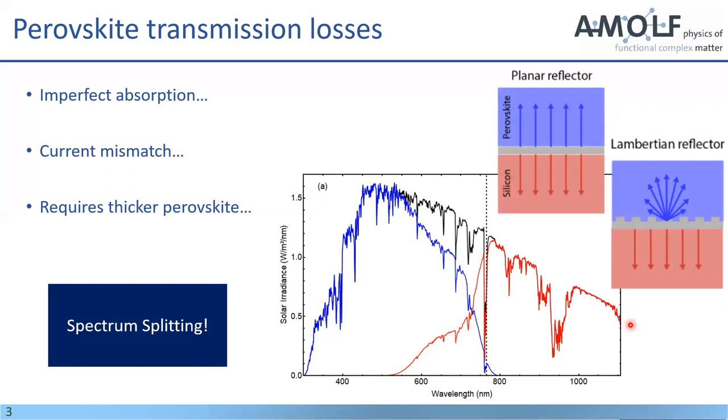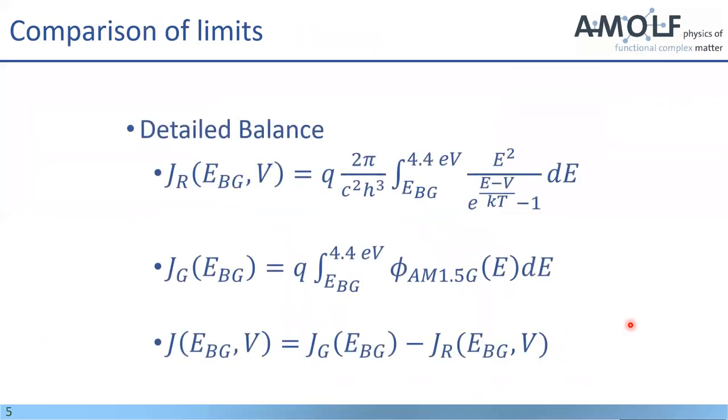So we investigated the possibilities of these concepts by doing detail balance calculations. And just as a quick reminder, detail balance calculations are based on these three equations where you have your recombination current, which is a function of your band gap and the voltage, and then your generation current, which mainly depends on your incident spectrum and the band gap. And then together the difference gives you an IV curve for a specific band gap.